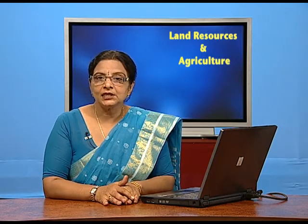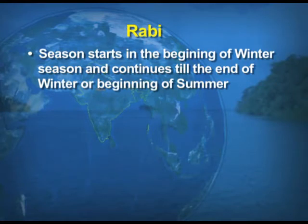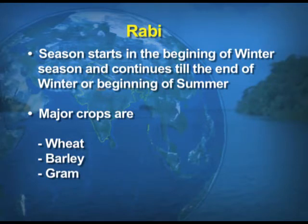The second season is rabi. The rabi season starts with the beginning of winter and continues till the end of winter or the beginning of summer. The crops which come under this season are wheat, barley, gram, oilseeds, etc. The difference between kharif and rabi must be clear: kharif starts with the onset of monsoons, while rabi begins in winter when we start sowing the crops — that season is known as the rabi season.